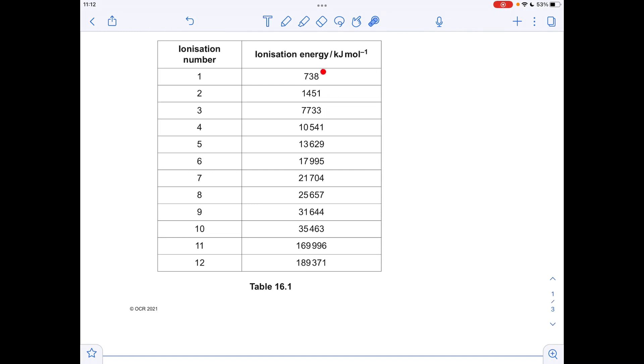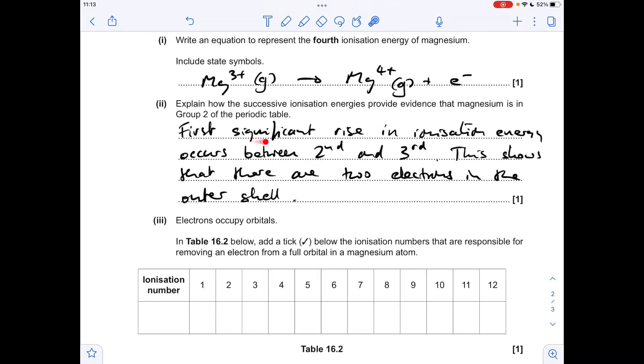So what that's telling us is these two electrons must be in an outer shell. And then the third electron must be in an inner shell. Therefore, it must have two electrons in its outer shell. It's in group two. So there's my answer. The first significant rise in ionization energy occurs between the second and the third. This shows there are two electrons in the outer shell.